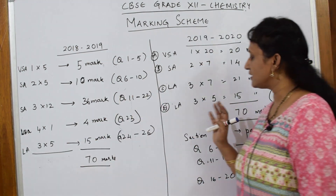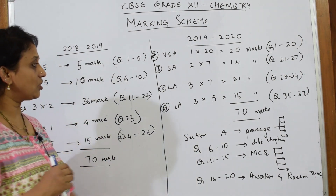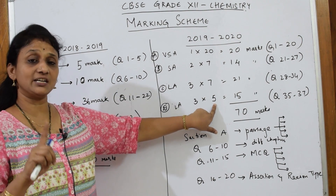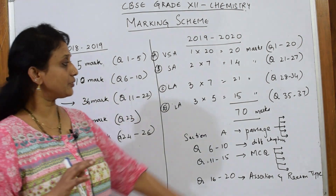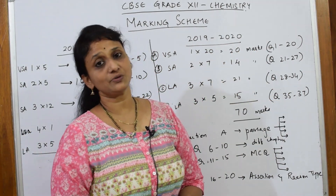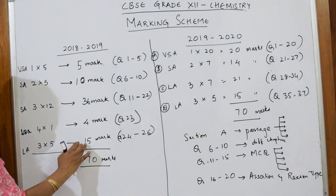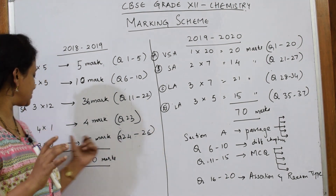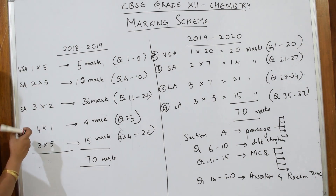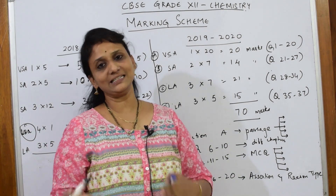This year there is no value-based question. Instead, they've moved directly to the long answer category — three questions of five marks each, totaling 15 marks, from question number 35 to 37. So from question 1 to 37 you must answer. In previous years, questions 24, 25, 26 covered this five-mark section.